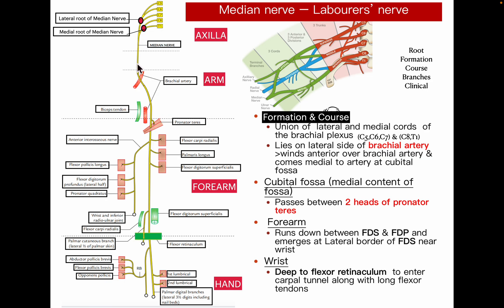The median nerve crosses the axilla and reaches the arm region, where it is initially lateral to the brachial artery. In the middle of the arm, it crosses the brachial artery and moves to the medial aspect. It then reaches the cubital fossa, where it is the medial-most content — the order being median nerve, brachial artery, biceps tendon, and superficial branch of the radial nerve. It leaves the cubital fossa by passing through the two heads of pronator teres, which it also supplies.